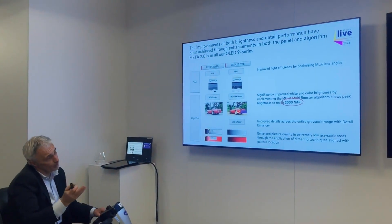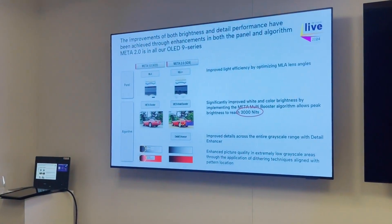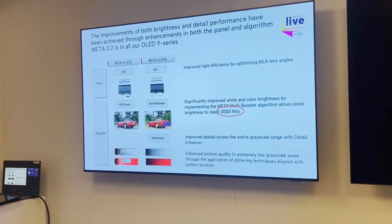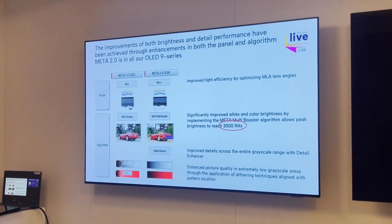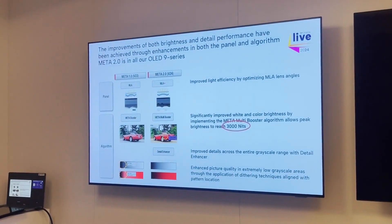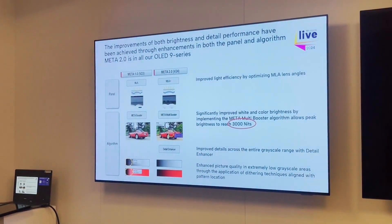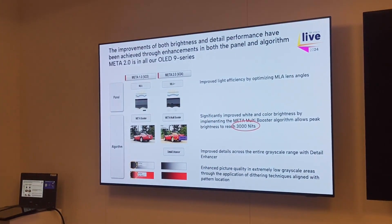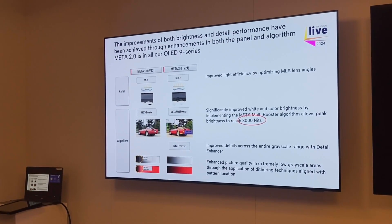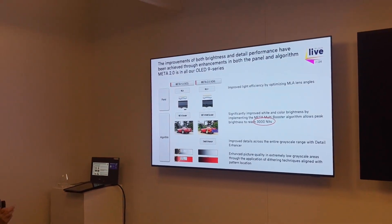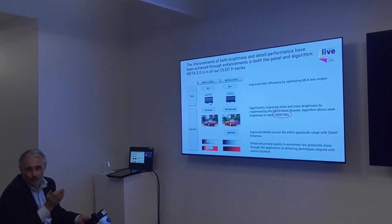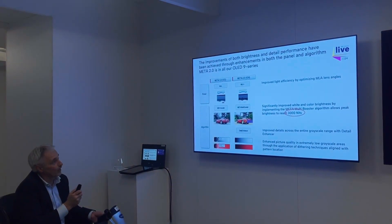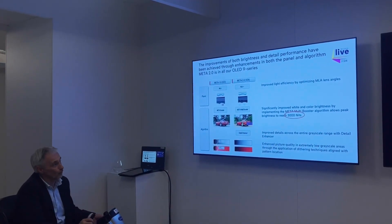For our OLED 9 series, we have a new meta panel version 2. It comes with a new improved micro-lens array — the curvatures of the lenses are different — resulting in more efficiency. In combination with the meta multi-booster, we can reach up to 3,000 nits. Our meta panel version one was achieving a maximum of 2,150 nits; now we can go up to 3,000.